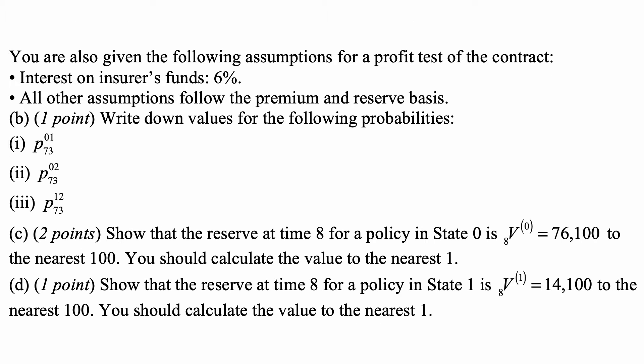You are also given the following assumptions for a profit test of the contract. Interest on insurer's funds is 6%. All other assumptions follow the premium and reserve basis. Part B: Write down values for the following probabilities: P7301, the probability of transition within the year from State 0 to State 1; P7302 from State 0 to State 2; and P7312 from State 1 to State 2.